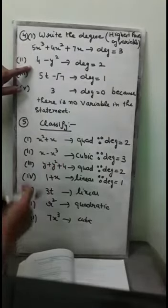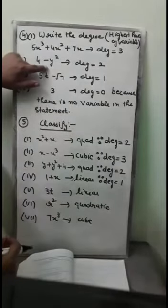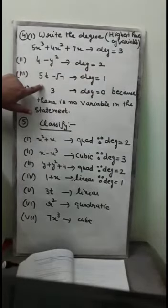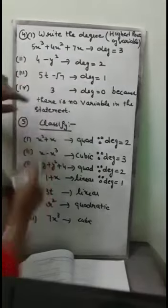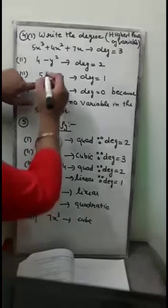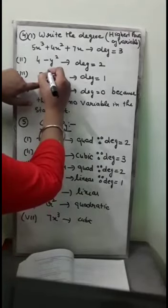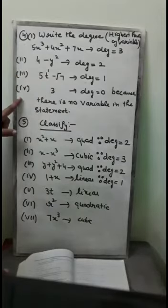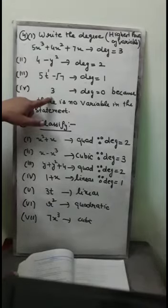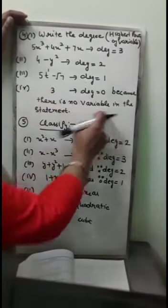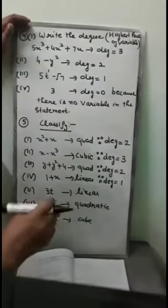In the second part, 4 minus y squared — the highest power of the variable y is 2, so degree is 2. In the third part, 5t minus 100 — the variable is t and since there is no explicit power written, it is understood to be 1, so degree is 1. In the fourth part, the statement is just 3 with no variable, so the degree of this polynomial is 0.